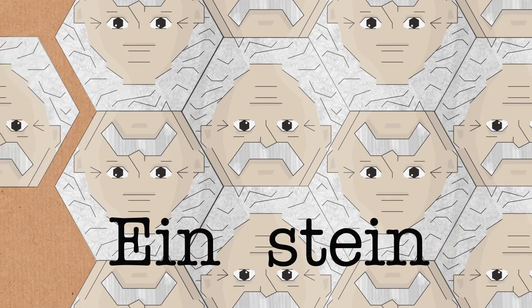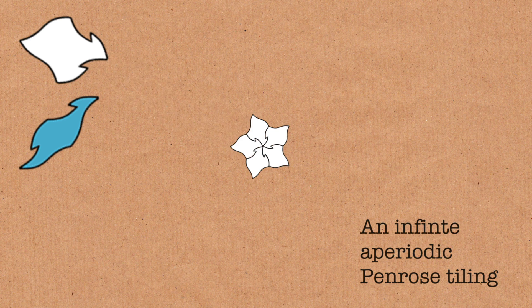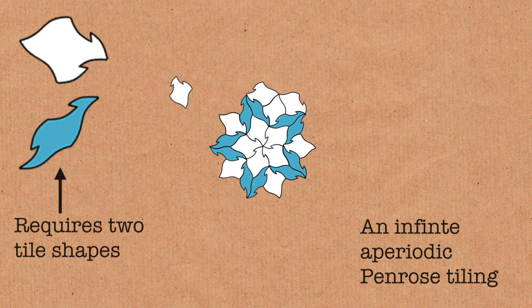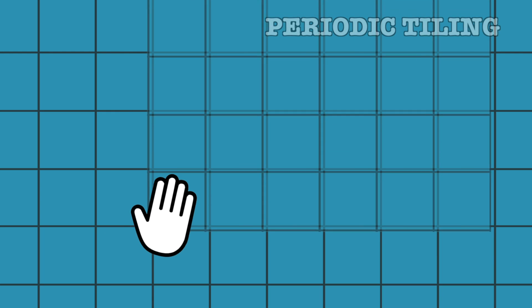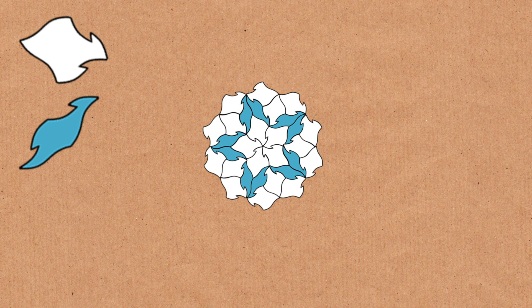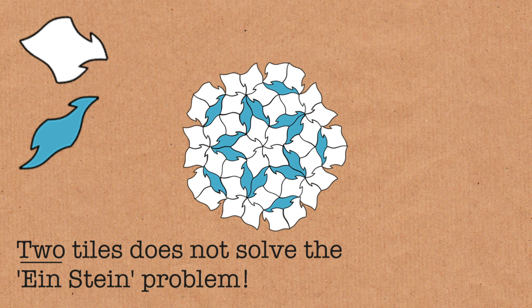The other thing it's related to is a problem called the Einstein problem — Einstein as in 'one tile,' it's a bad pun. And that asks if there is a single tile which will tile the plane, but not periodically. So all the infinite tilings we know so far are periodic. We have things like the Penrose tiling, but that has two different shapes. You're asking for tilings that will only produce non-periodic tilings.